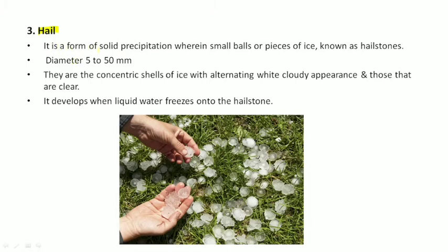It is a form of solid precipitation, or you can say it is a frozen form of precipitation wherein small balls or pieces of ice, here you see it is small balls, known as hailstones. Its diameter is 5 to 50 mm.